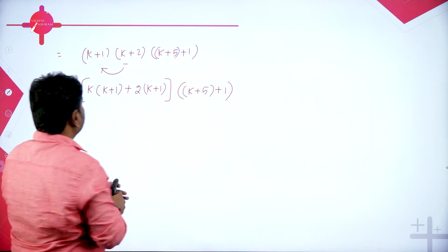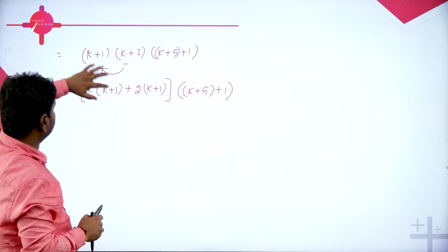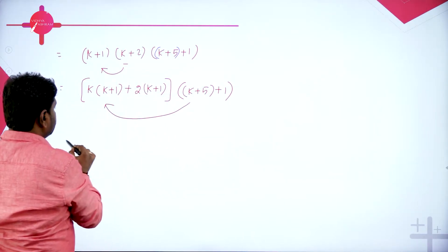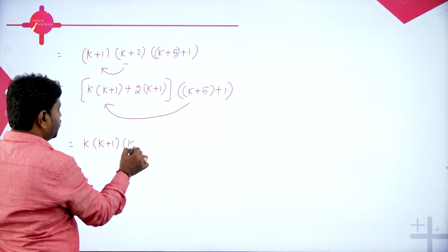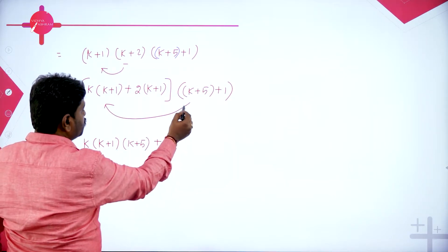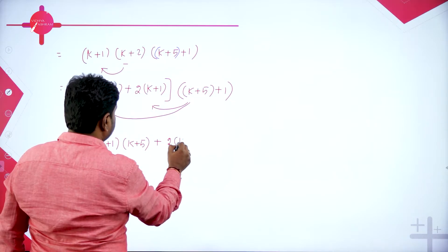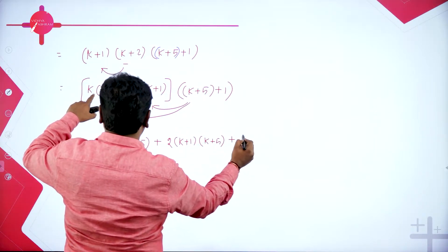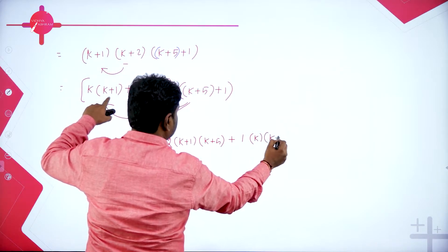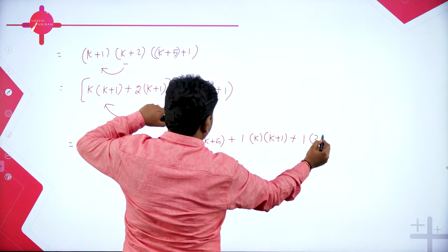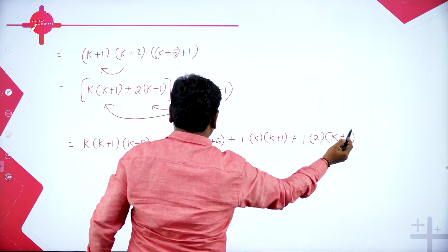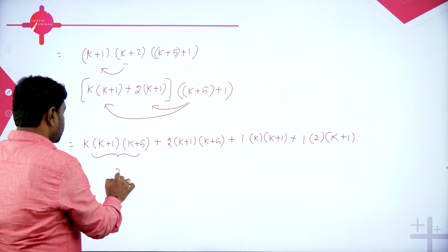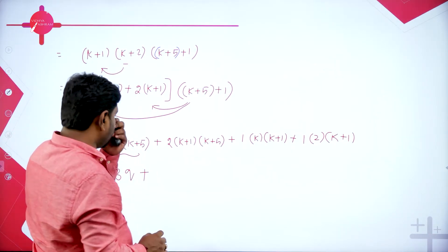So we want k, k+1, k+5 together. If I multiply k into this term, I will have k(k+1) plus 2(k+1), the whole thing multiplied by (k+5), plus 1. So I am taking k and multiplying to get k(k+1), then taking 2 and multiplying. Now I multiply this term: if I do that, I get k(k+1)(k+5) plus 2(k+1)(k+5). Further, I should also multiply 1 to get 1×k(k+1) plus 1×2(k+1). Now here k(k+1)(k+5) equals 3q; I will write it as 3 times q. And in the remaining two terms I can take common wherever necessary.